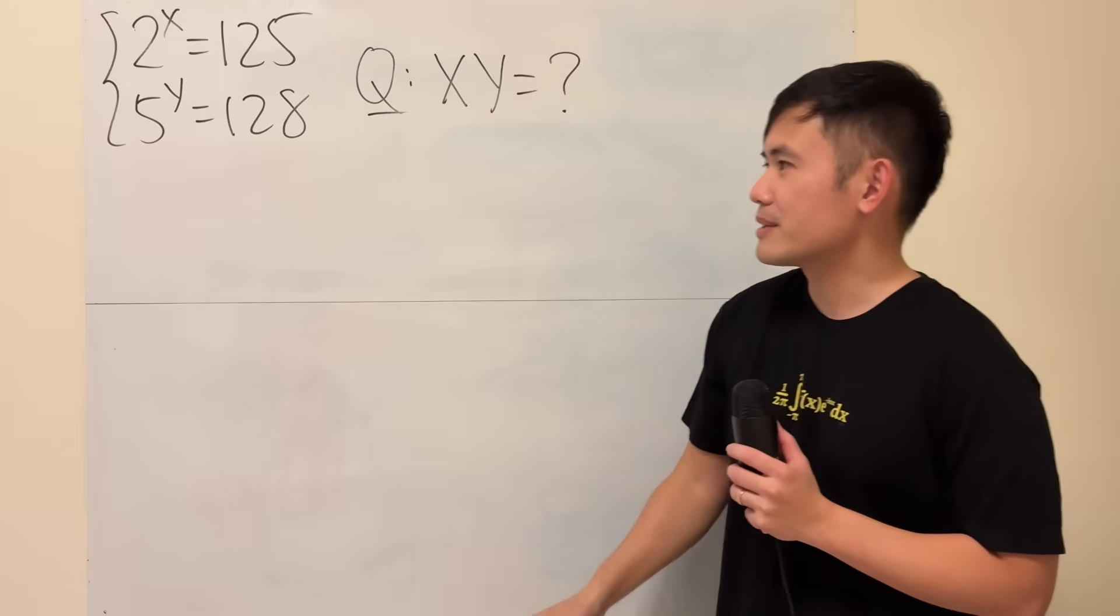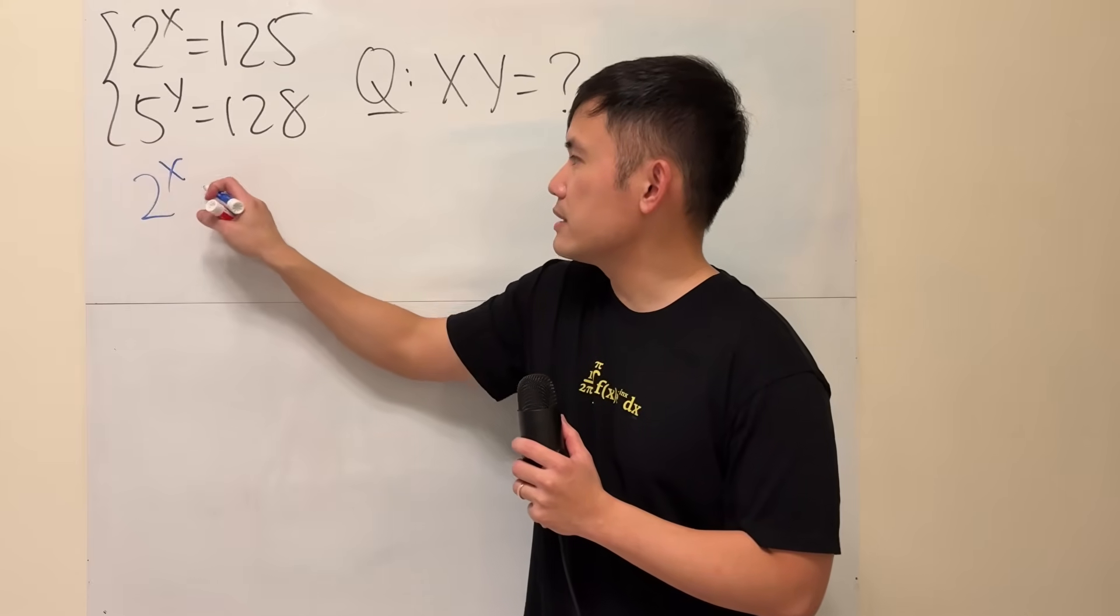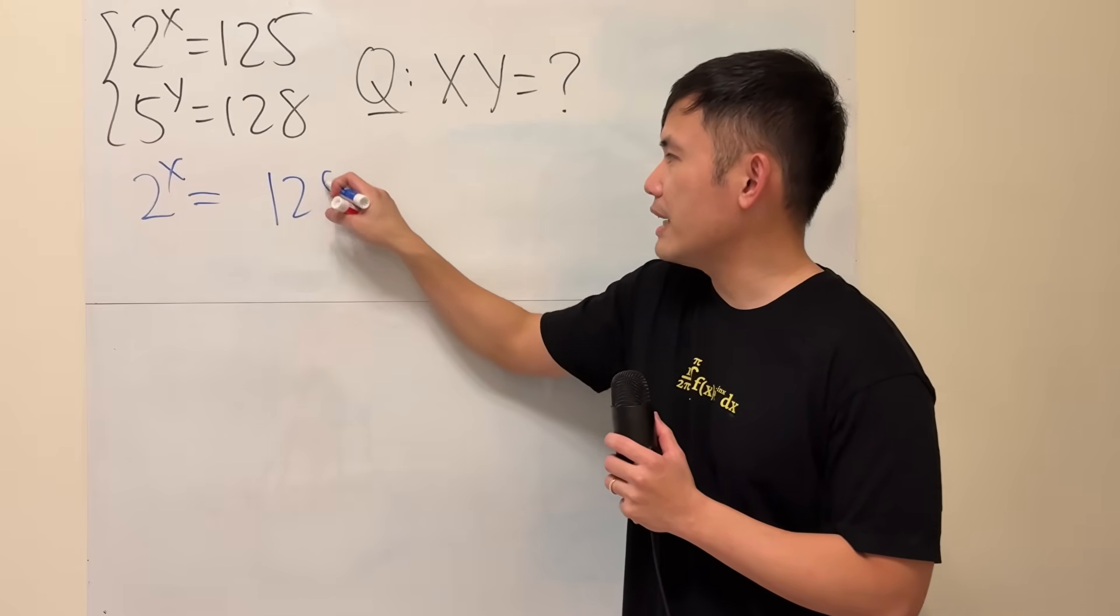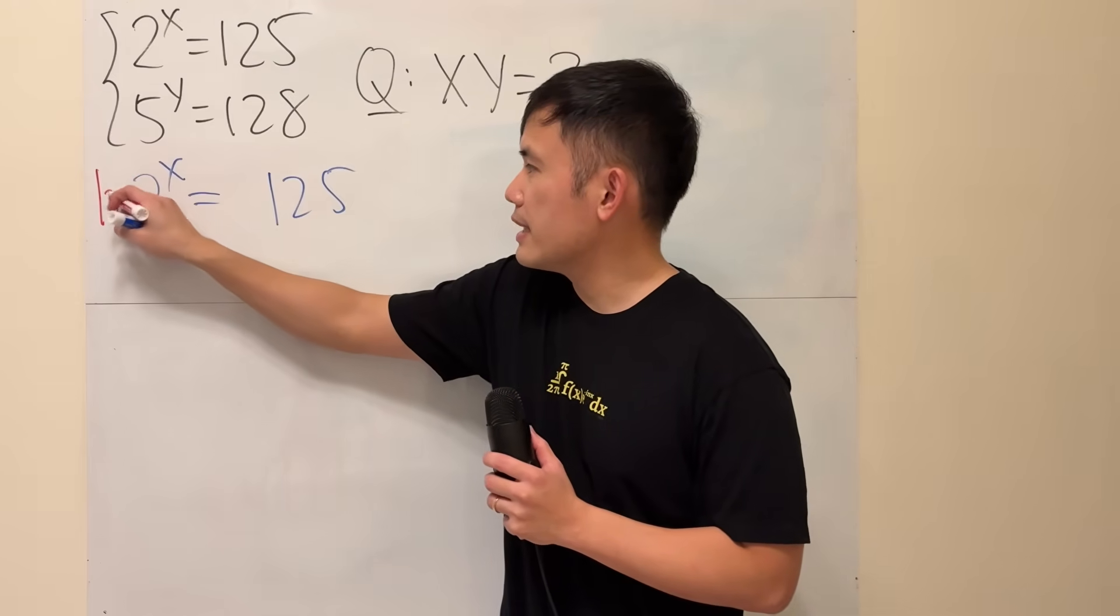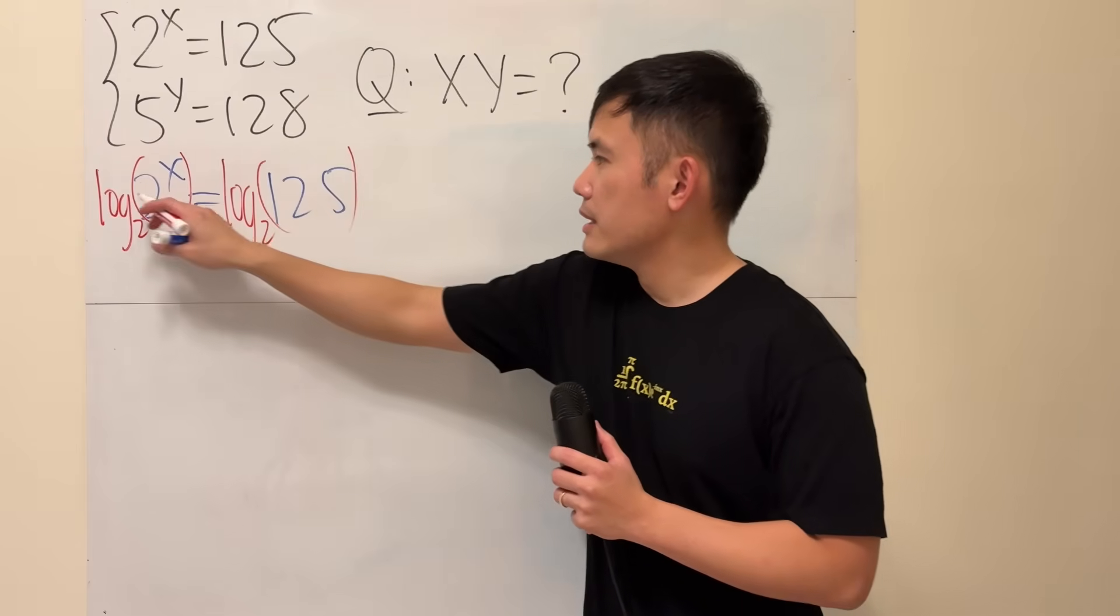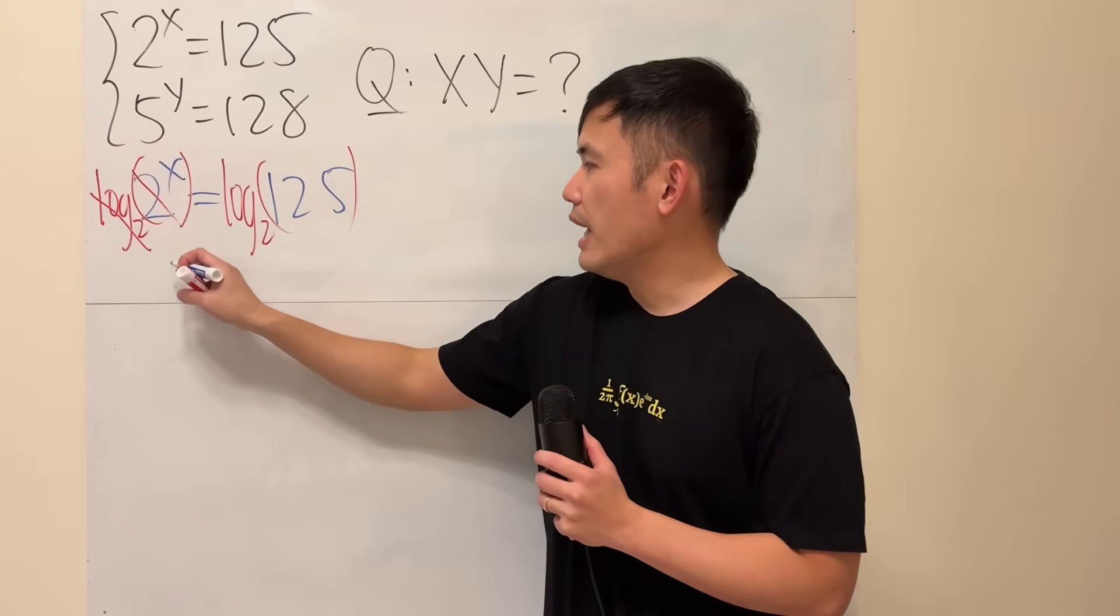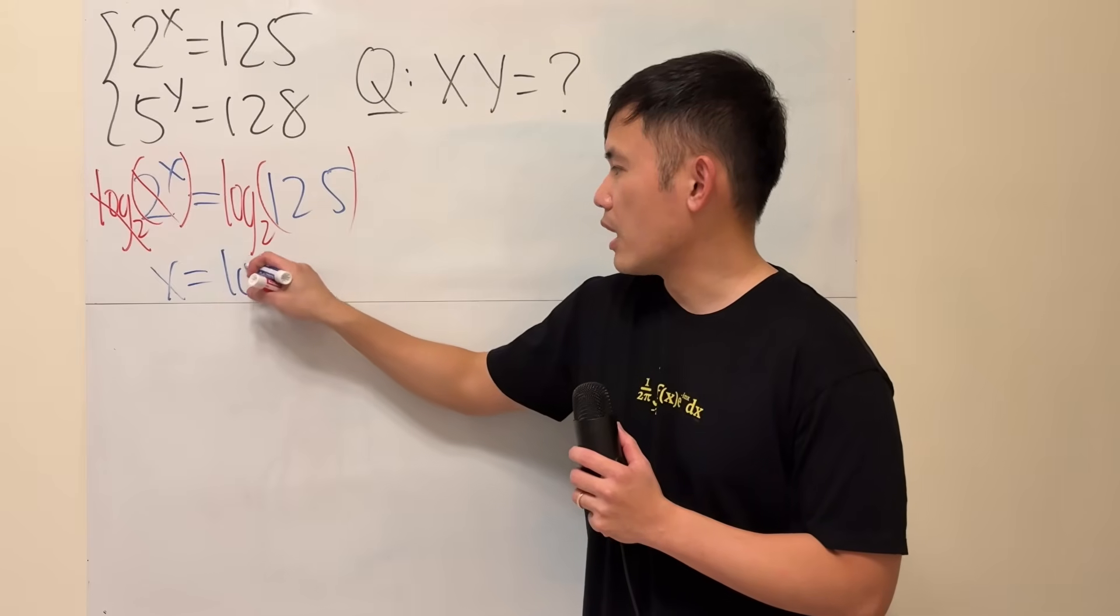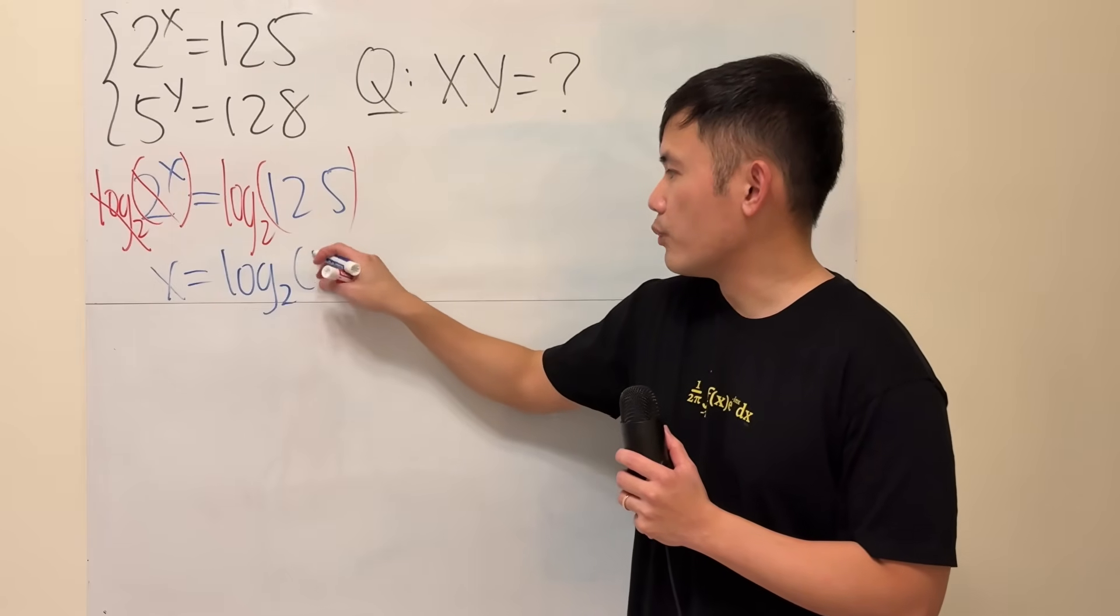So, check this out. First, if we start with 2 to the x is equal to 125, yes, we can take both sides log base 2, so that this and that will cancel, and we just get x being equal to log base 2 of 125.